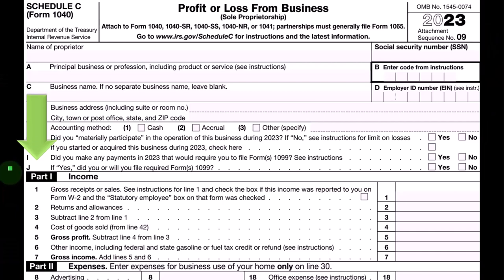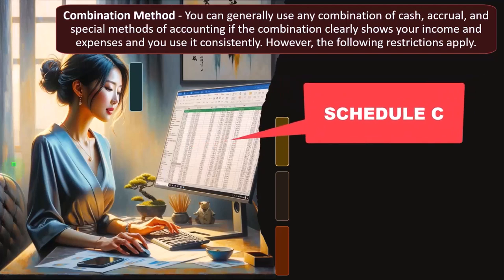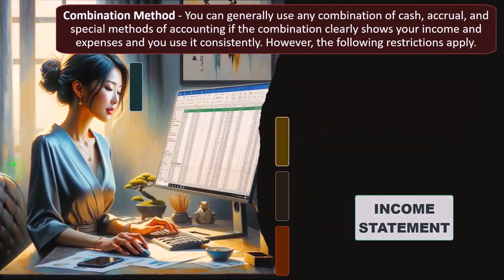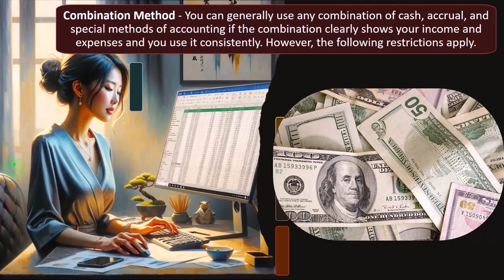We've been talking about the format of the Schedule C, which is a major financial statement format — basically the income statement or profit and loss, as opposed to the balance sheet. This makes sense for an income tax because we need to calculate income minus expenses in order to apply the tax.